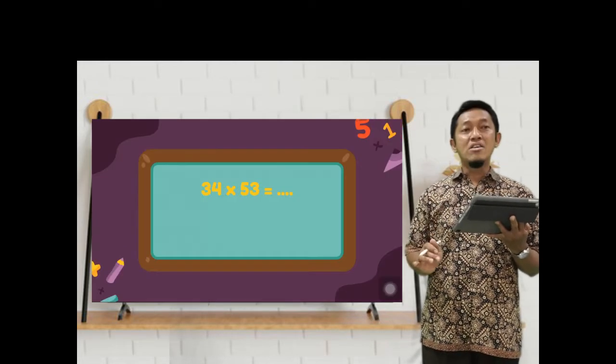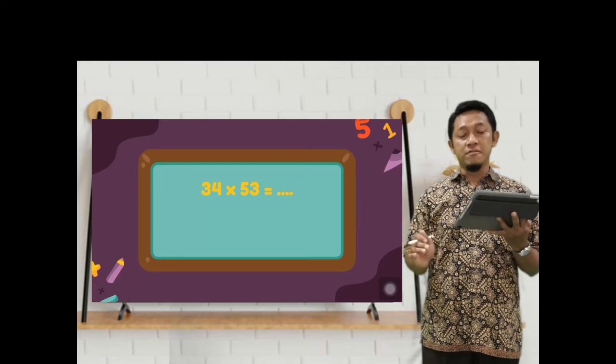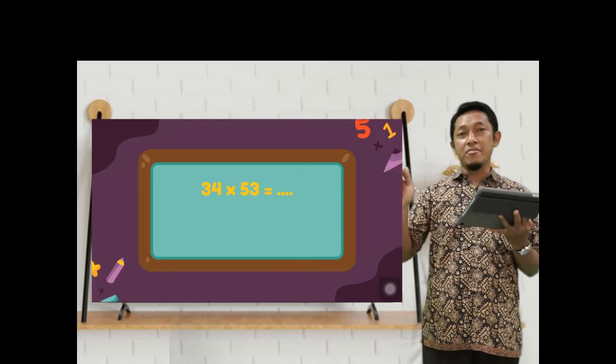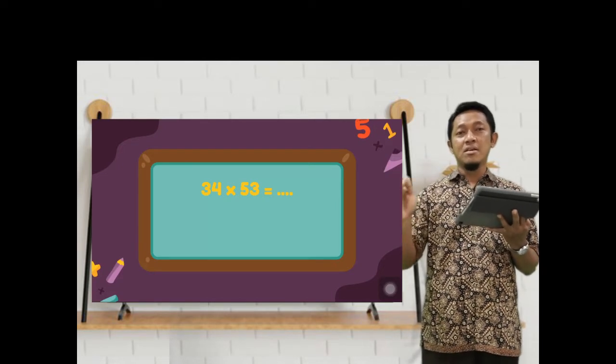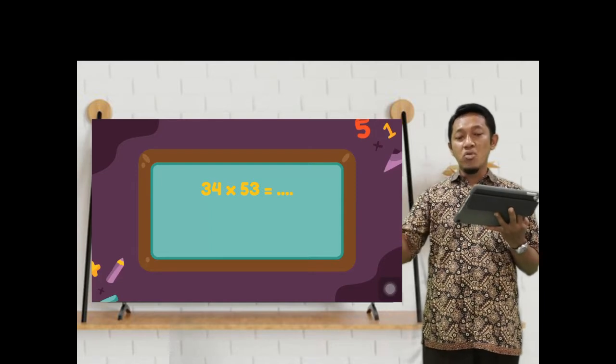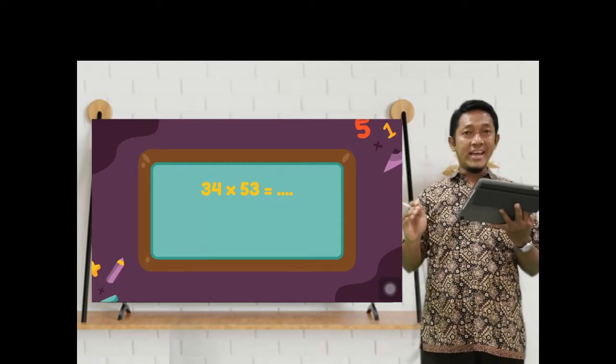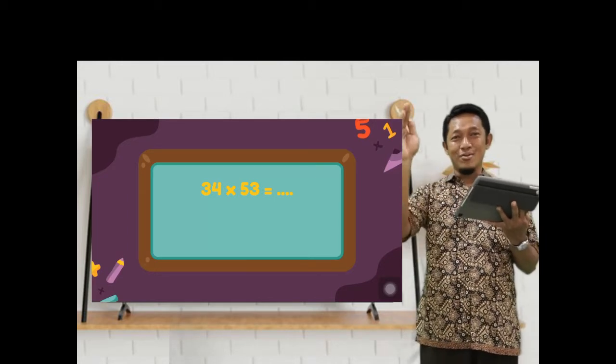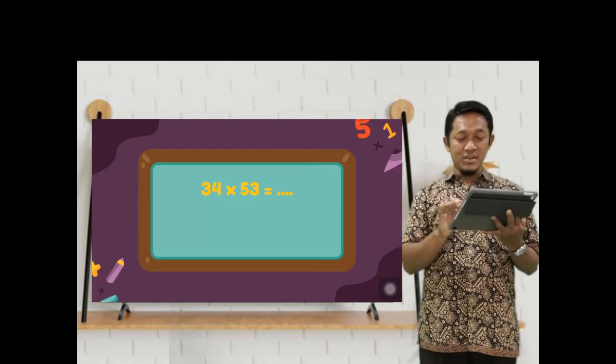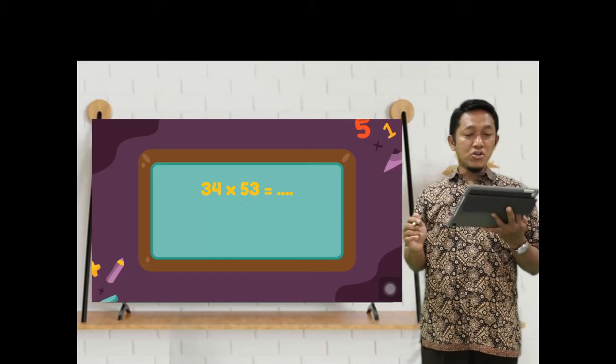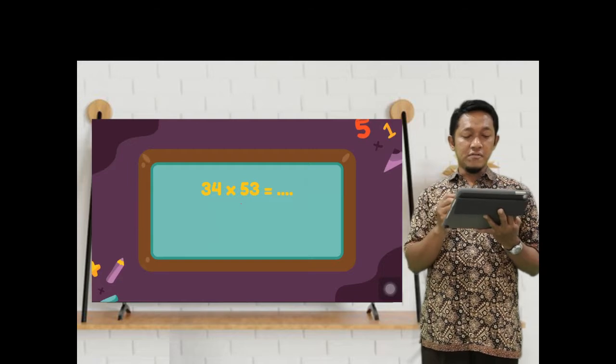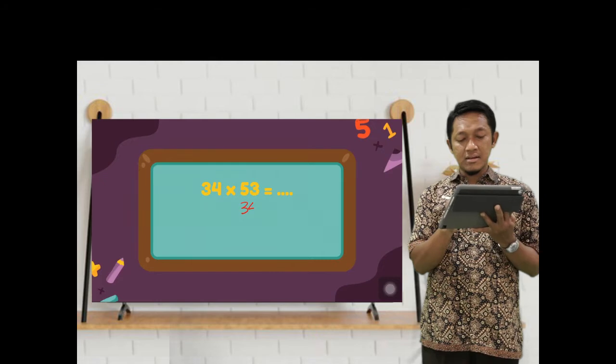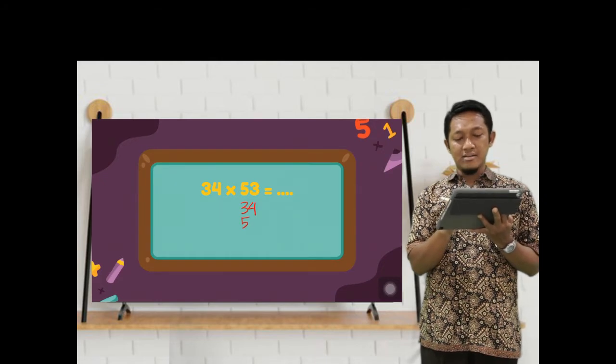Next, how to multiply 2 digits versus 2 digits? Two numbers times two numbers. Tens and ones times tens and ones. The trick is straight, diagonal, diagonal, straight. How to find out the result? 34 times 53. 34 times 53.